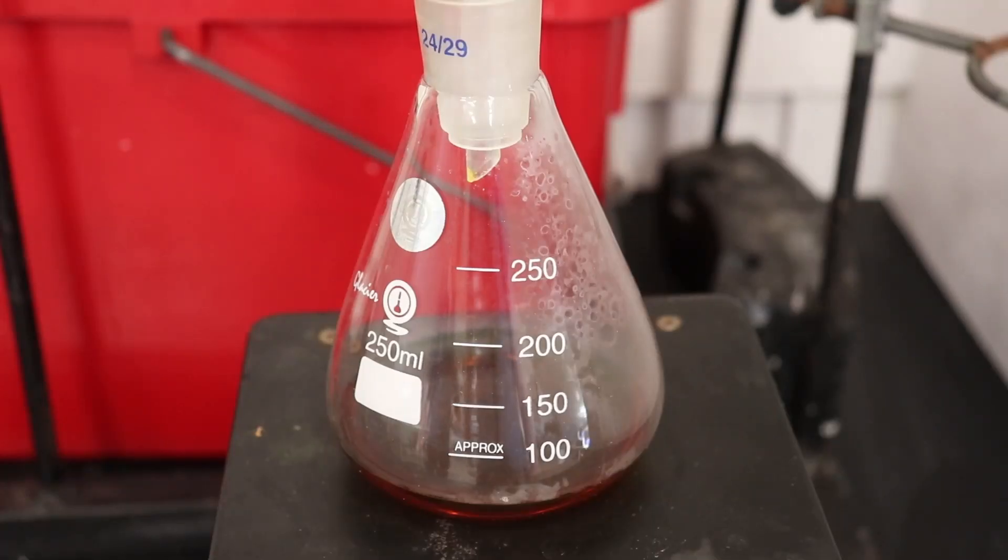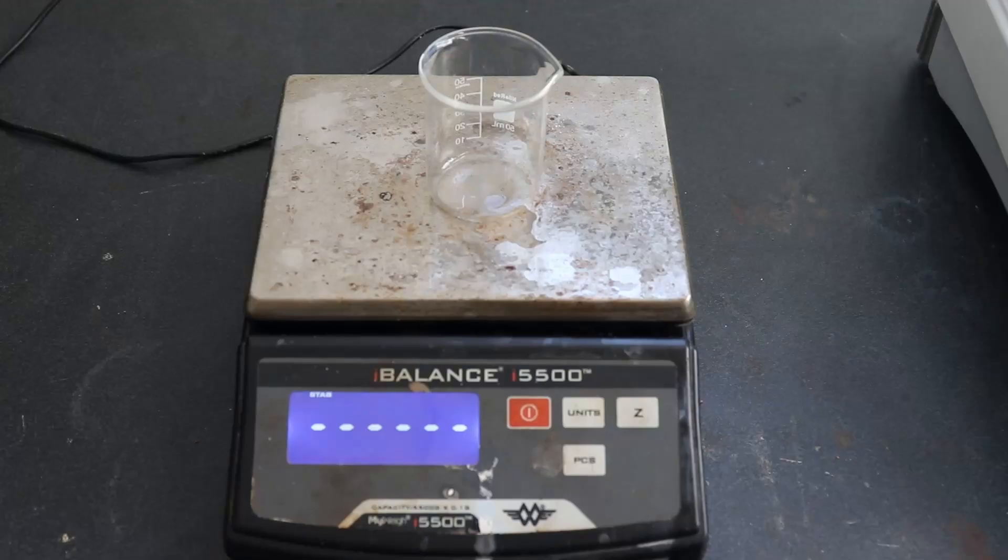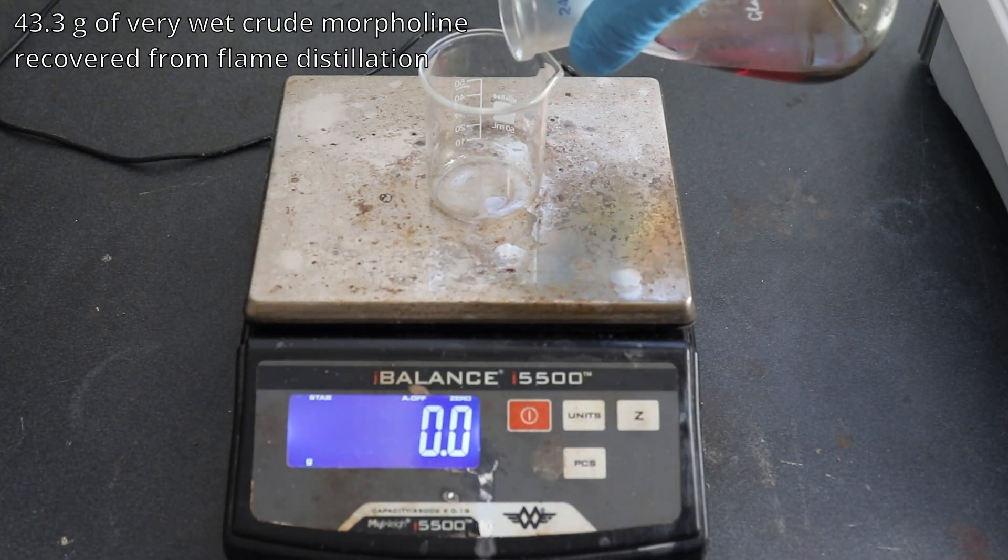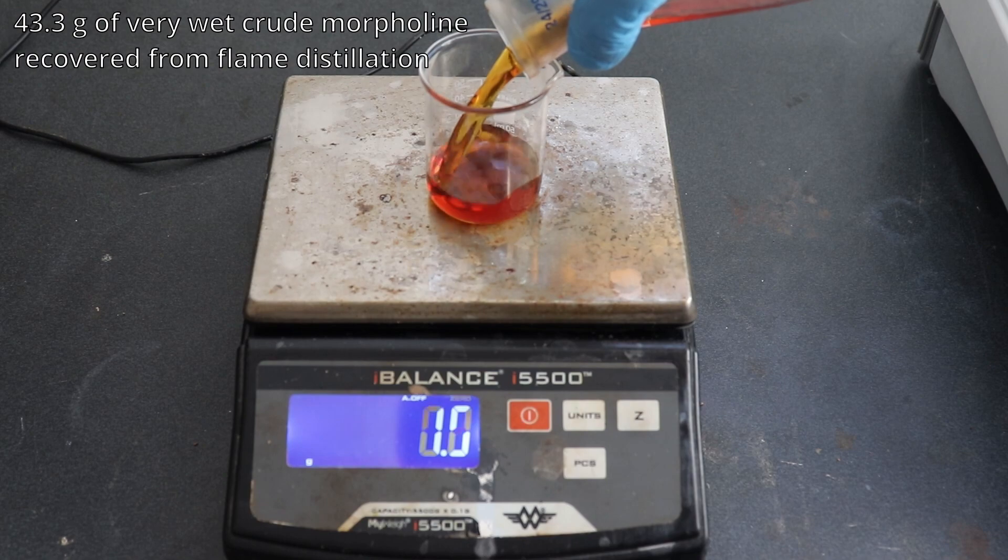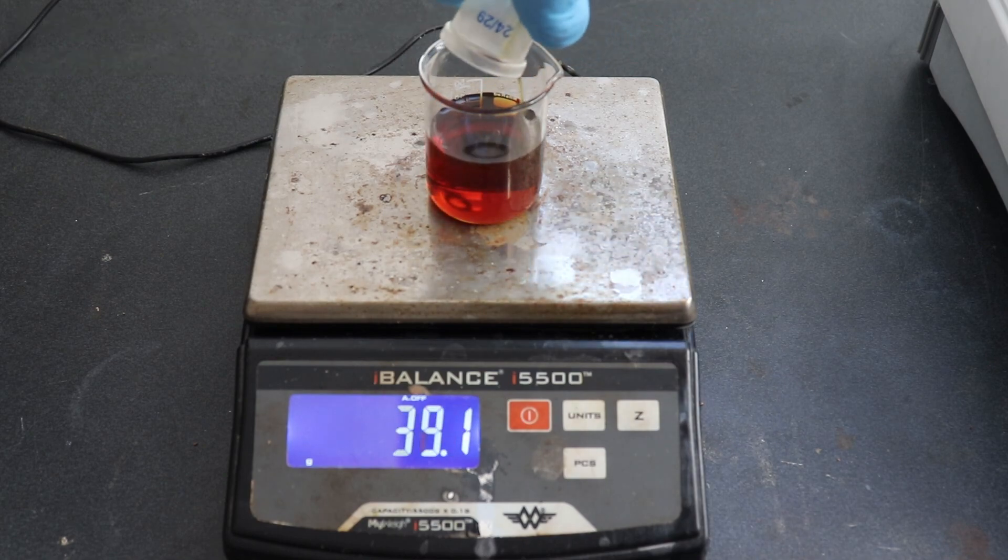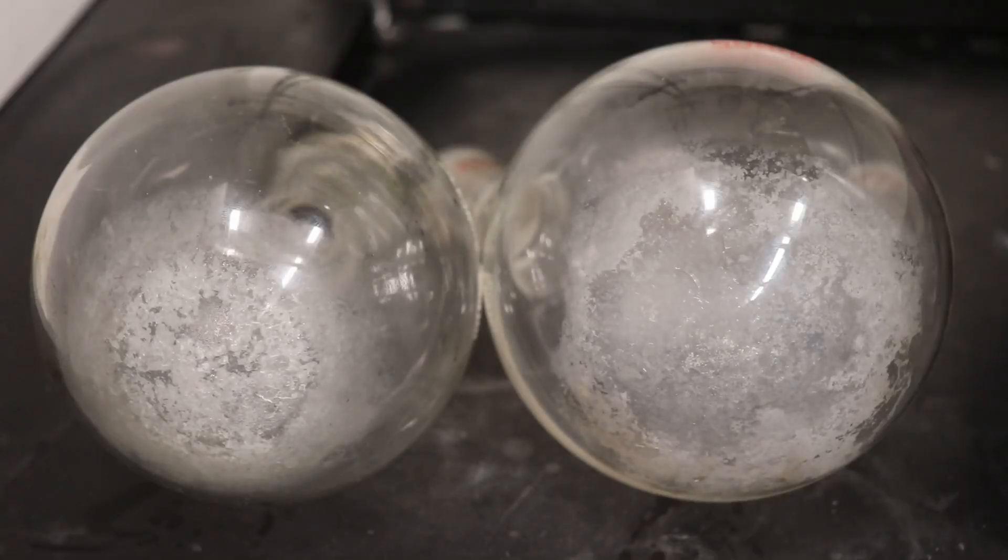43.3 grams of the free-flowing dark amber distillate was collected, which possessed a painfully sharp burnt fishy odor. The high temperature with the calcium oxide irreparably damaged the flask and led to microfractures in the glass, so expect to be sacrificing a flask if you attempt this synthesis.